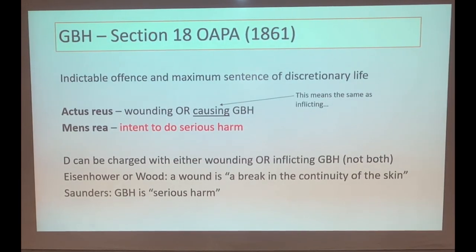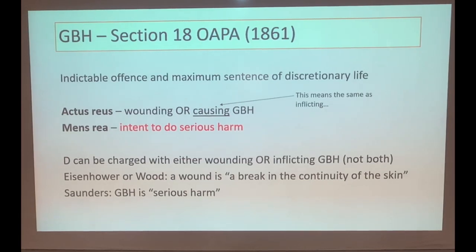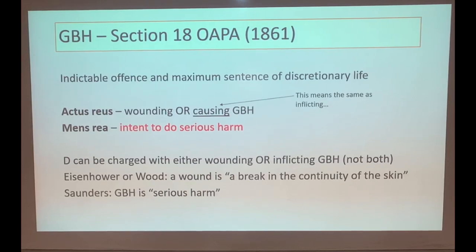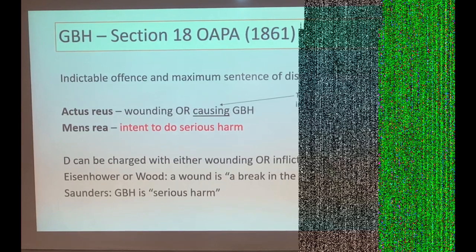Section 18 of the Offences Against the Person Act covers the higher GBH offence. It is indictable, tried in the Crown Court, with a maximum sentence of discretionary life - the judge has a choice whether to give life or anything below. The actus reus is wounding or causing GBH; the courts have confirmed that 'causing' means the same as 'inflicting' in this context, so the actus reus for Sections 20 and 18 is identical. The mens rea is intent to do serious harm. A wound remains a break in the continuity of the skin, and GBH means serious harm as per Saunders.